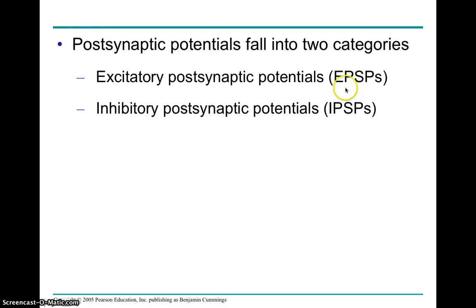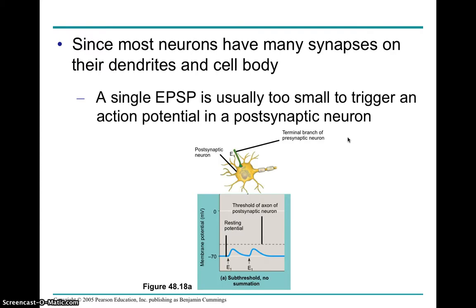Postsynaptic potentials are graded and they don't regenerate themselves. We can have EPSPs — excitatory postsynaptic potentials — or IPSPs — inhibitory postsynaptic potentials. Excitatory postsynaptic potentials are going to depolarize the postsynaptic cell, moving it closer to threshold and making it easier to fire. Inhibitory postsynaptic potentials are going to hyperpolarize the postsynaptic cell. These can be combined — you can have 10 excitatory and two inhibitory postsynaptic potentials on the same dendrite, and all of their effects will be summed together to produce the final outcome.